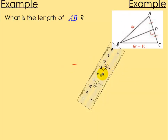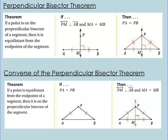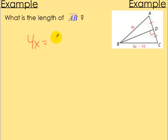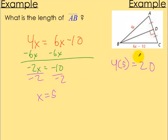Alright, let's try some examples. What is the length of segment AB? Looking at this picture, AD is congruent with CD, so D is a midpoint, and there's a right angle here. Because of the perpendicular bisector theorem, those two sides have to be equal, so 4x equals 6x minus 10. Solving for x: subtract 6x on both sides to get negative 2x equals negative 10, then divide by negative 2 to get x equals 5. But that's not the end — I plug 5 into 4x: 4 times 5 equals 20. So the length of AB is 20.